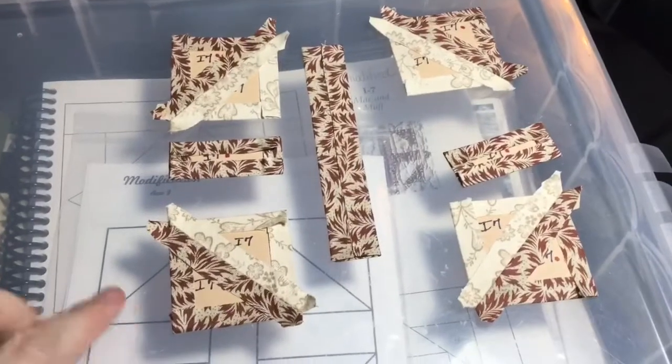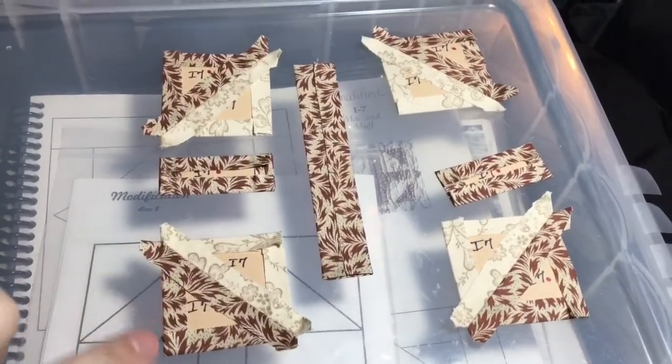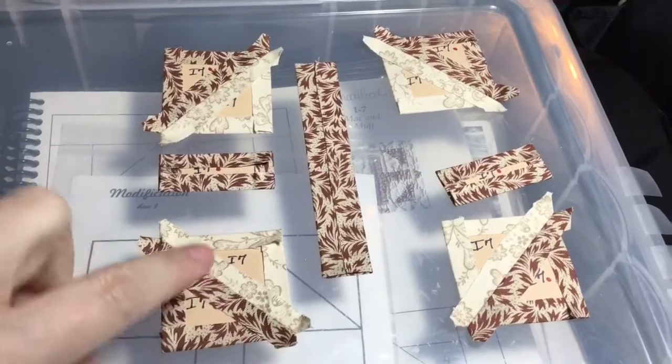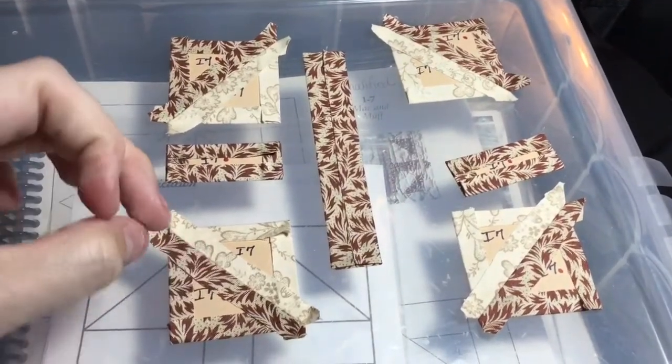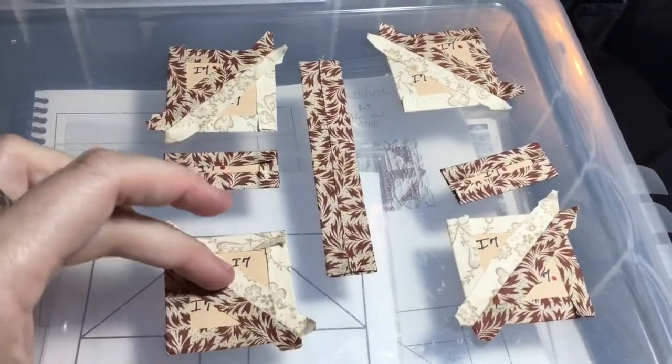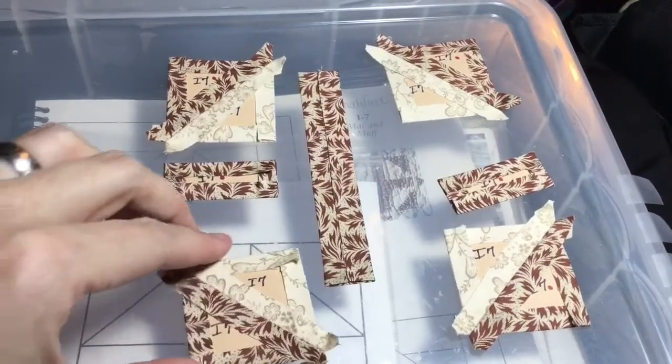I've got all my pieces basted. I've taken my triangles and did this side first, and then this side, and then this side, which puts my tags opposing so I don't have to worry about them clashing with each other on the half-square triangles.